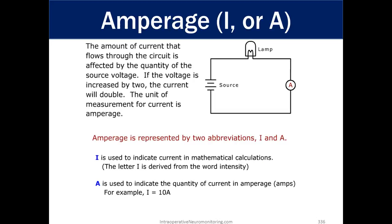Amperage, abbreviated I or A. The amount of current that flows through the circuit is affected by the quantity of the source voltage. If the voltage is increased by two, the current will double. The unit of measurement for current is amperage. Amperage is represented by I and A. The I is used to indicate current in mathematical calculations. The letter I is derived from the word intensity. A is used to indicate the quantity of current in amperage or amps. For example, the intensity equals 10 amperage.